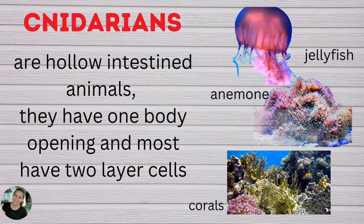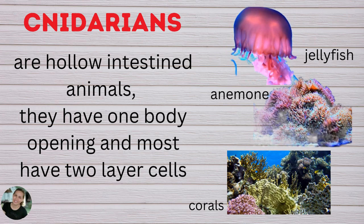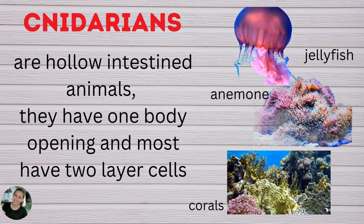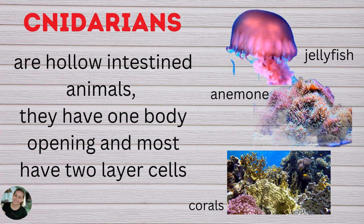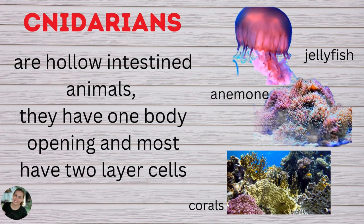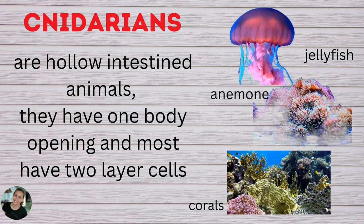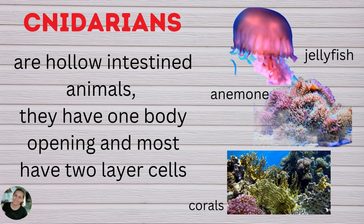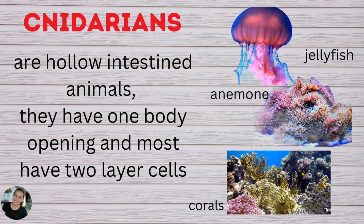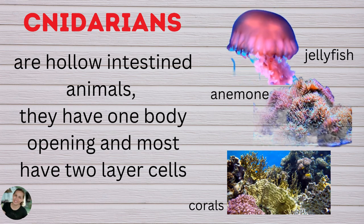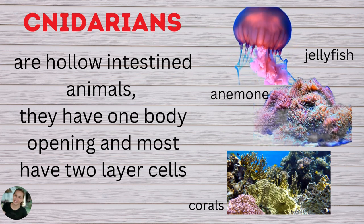The next group of invertebrates are cnidarians. They are hollow-bodied animals with one body opening, and most have two-layer cells. Examples of this are jellyfish, anemone, and corals.